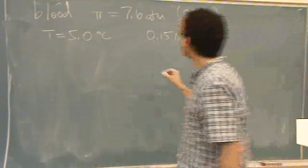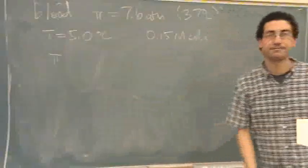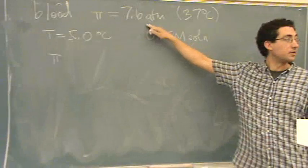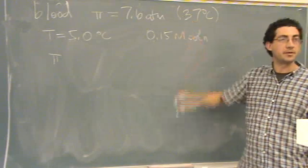It wants to know what π is - the osmotic pressure. Why is it not this 7.6 atmospheres? Different temperature. What am I going to do with this number?